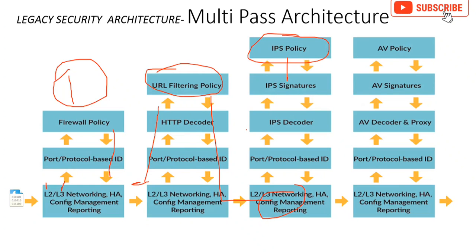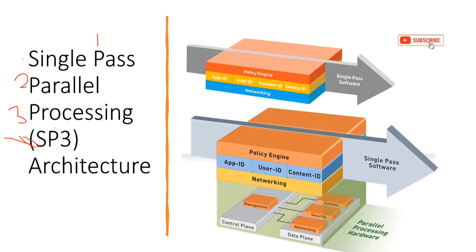The solution to this delay is why Palo Alto came up with the single pass concept. In single pass, once the packet hits the firewall interfaces and zones, every engine works together during inspection. It's not happening sequentially where the App-ID engine checks, closes, then User-ID checks, then Content-ID checks. Instead, once the packet hits the zone, every engine starts working together simultaneously, checking every process at the same time.